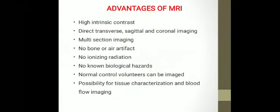What are the advantages of MRI? MRI has high intrinsic contrast. Direct transverse, sagittal, and coronal imaging can be done. Multi-section imaging can be done. In CT, we can only do an axial scan and then get a reformatted image, but in MRI we can directly do axial, sagittal, and coronal scans. There is no bone or air artifact in MRI. No ionizing radiation and no known biological hazards. Normal control volunteers can be imaged, and there is the possibility for tissue characterization and blood flow imaging.